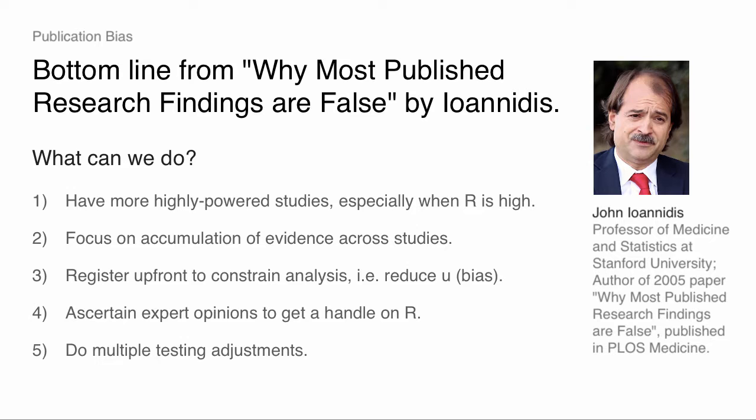First of all, we should have more highly powered studies, especially when R is high. He says we should be putting our research dollars into studies where R is high — where we have a sense there's something real here already, our prior is there's something here — and put together a high-powered study that definitively proves it. He very much thinks in this binary world and downplays the importance of exploratory research, seeing it as full of non-results.